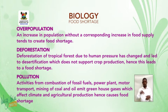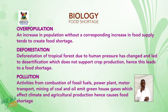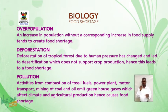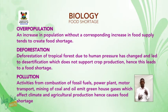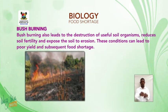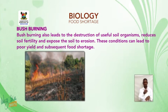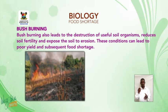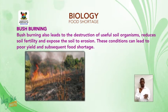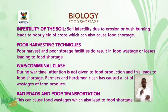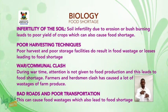Pollution. Activities from combustion of fossil fuels, power plants, motor transport, and mining of coal and oil emit greenhouse gases which affect climate and agricultural production, hence causing food shortage. Bush burning also leads to destruction of useful soil organisms, reducing soil fertility and exposing the soil to erosion. These conditions can lead to poor yield and subsequent food shortage. Soil infertility due to erosion and bush burning leads to poor yield of crops, which can also cause food shortage.